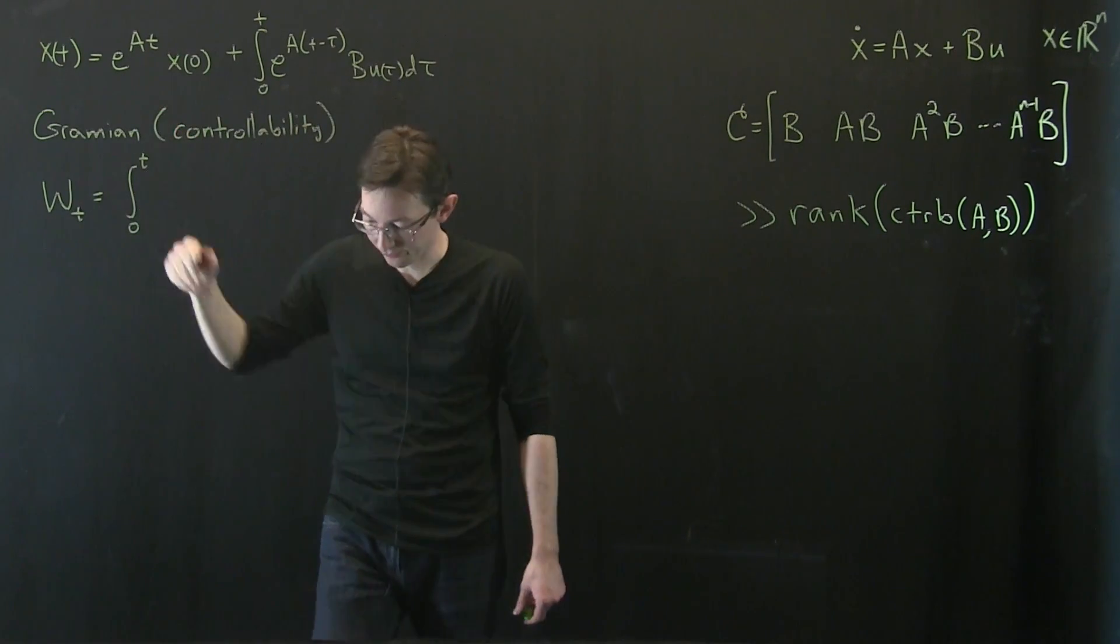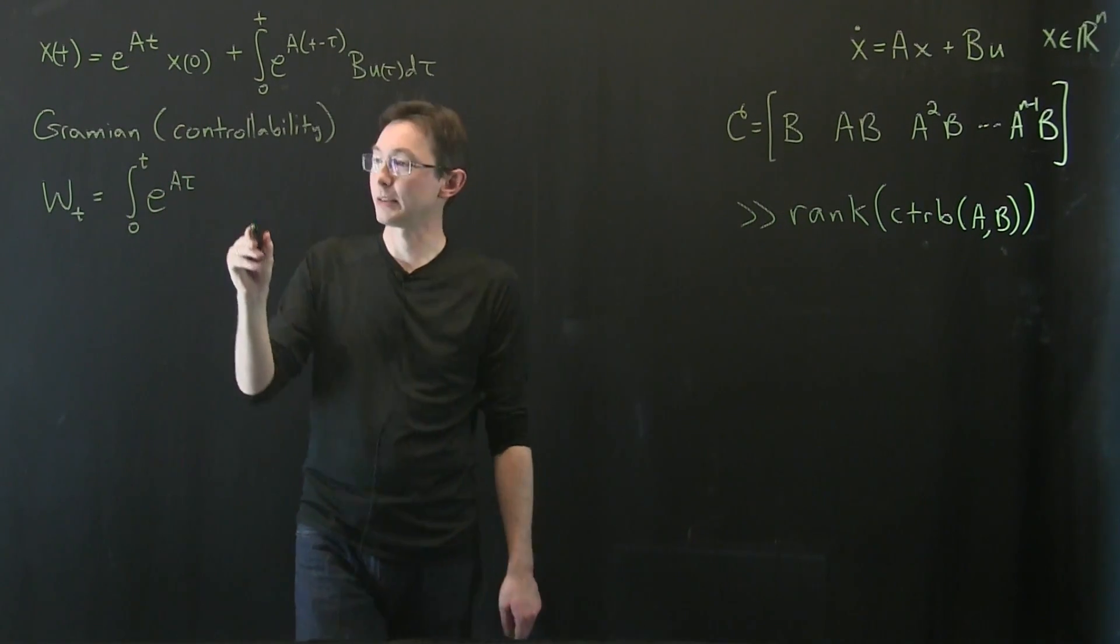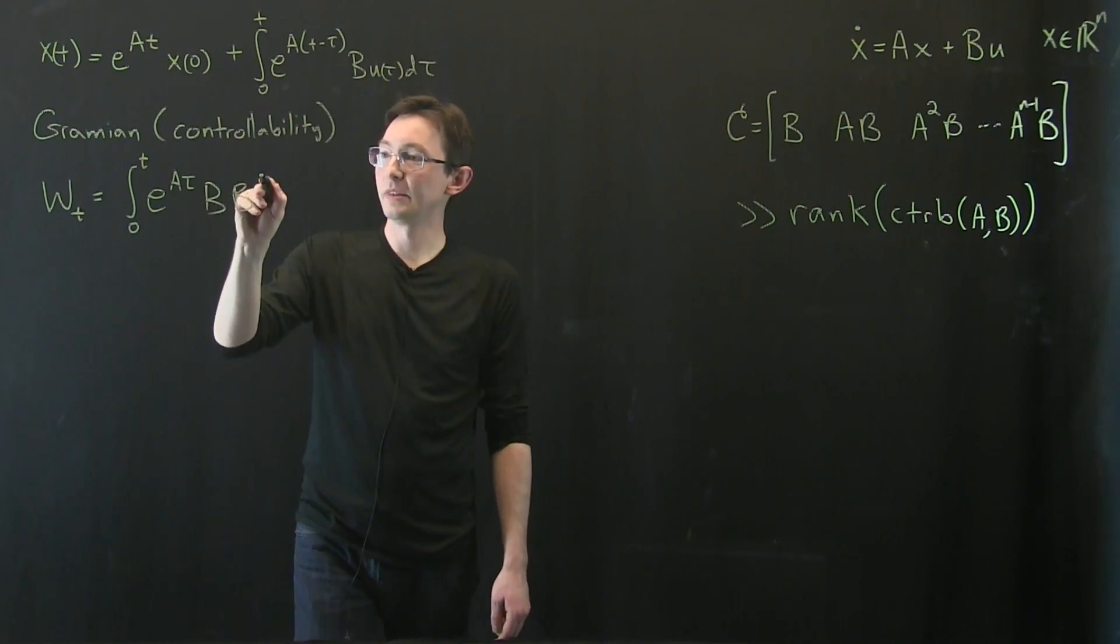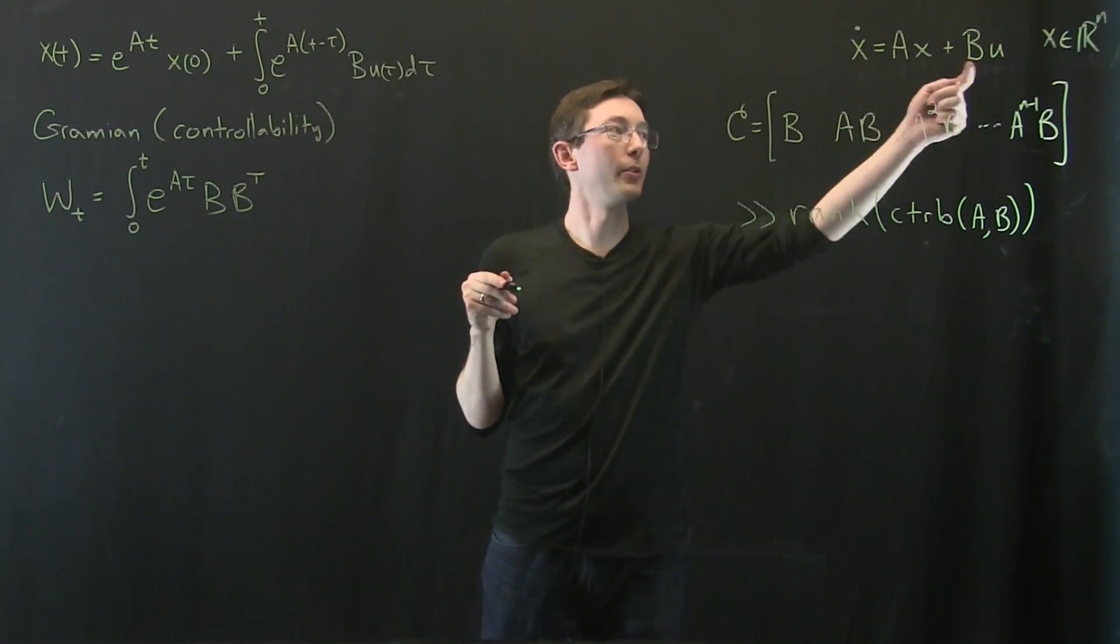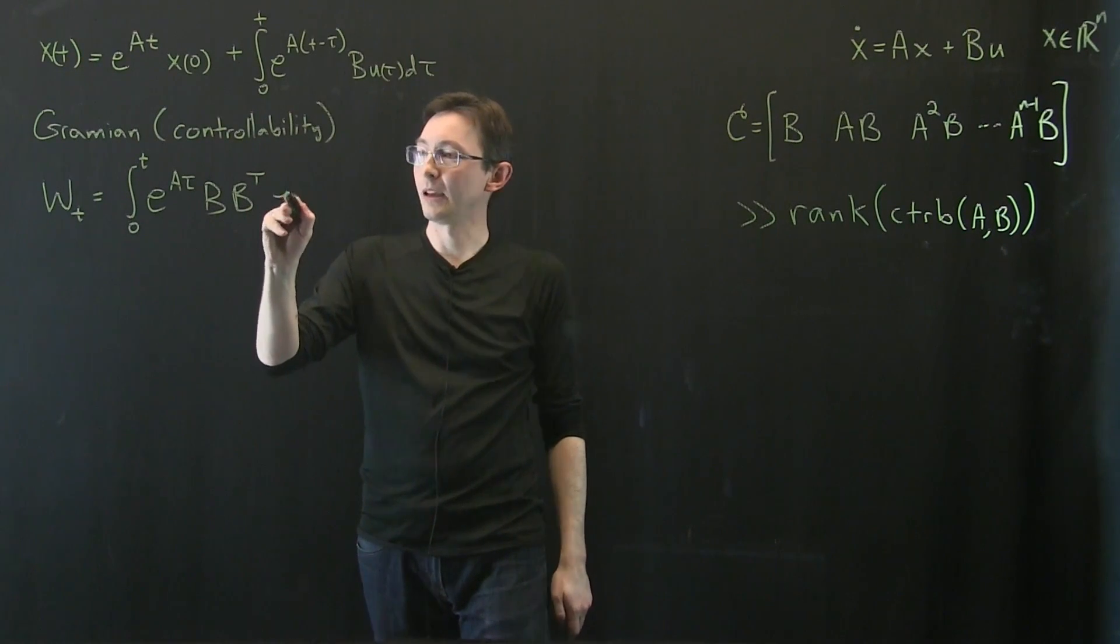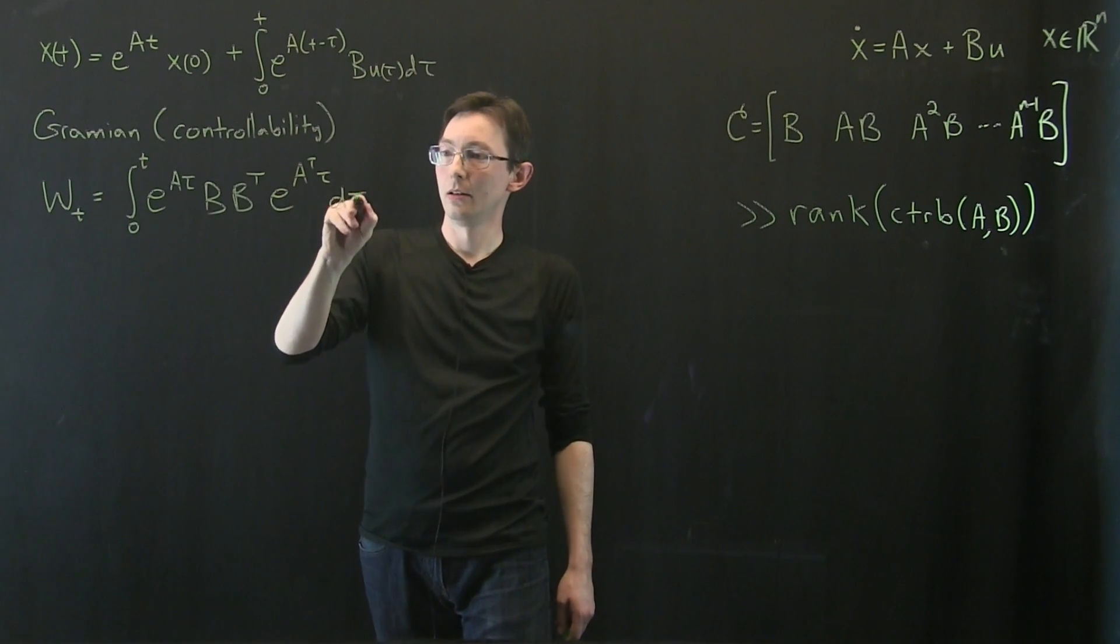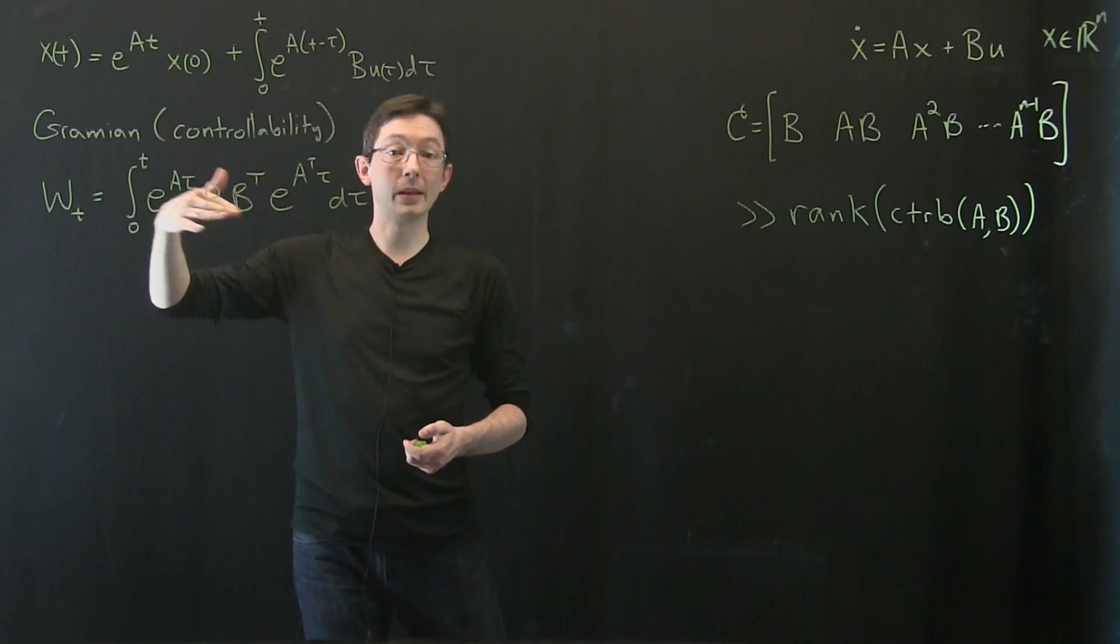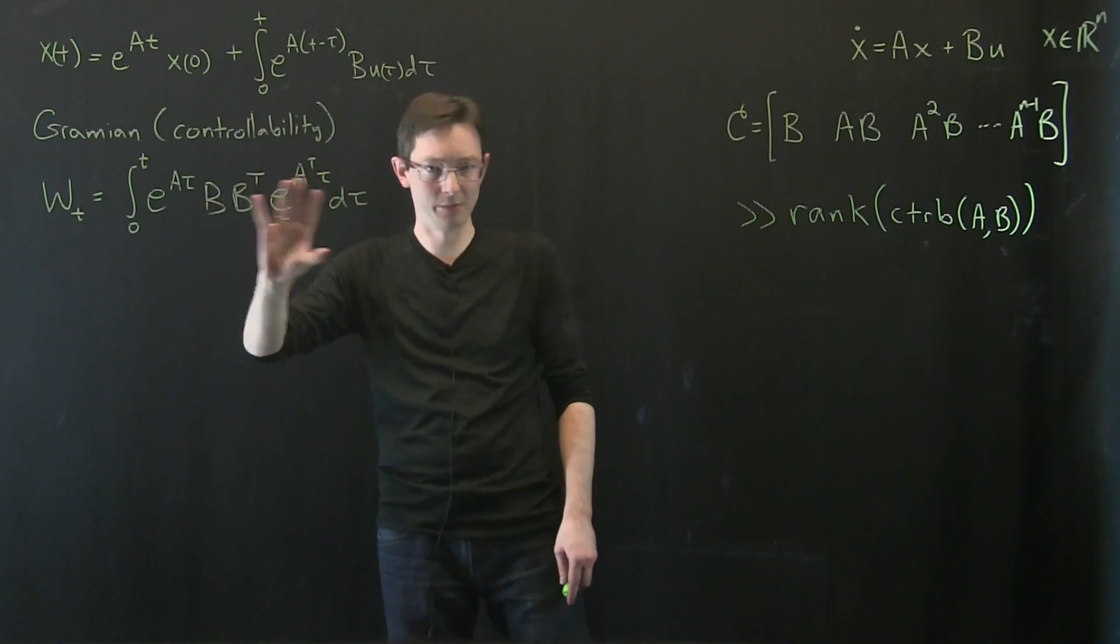So the controllability Gramian is this object Wt equals integral from 0 to t, sometimes this is from 0 to infinity, e to the A tau B times B transpose, sometimes people do complex conjugate transpose, but I'm going to start with real valued A's and B's. If these were complex, this would be a star, times e to the A transpose tau d tau. So this is the time t Gramian. Oftentimes we take t goes to infinity and we look at the infinite time Gramian, but for now let's just look at this object.